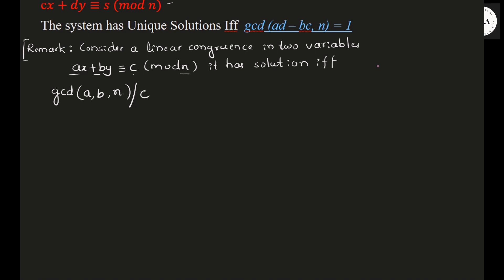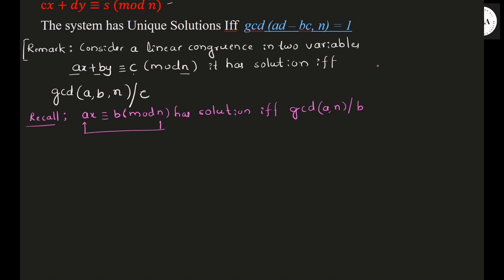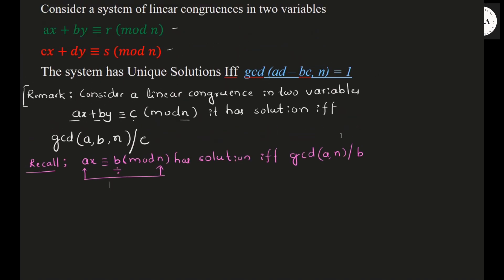Just to recall, already you have studied the linear congruence in one variable. What is that? Ax congruent to b mod n. It has solutions if and only if gcd of a, n is divisible by b. This is what we studied. gcd of a and n is divisible by b, then you can say it has a unique solution.